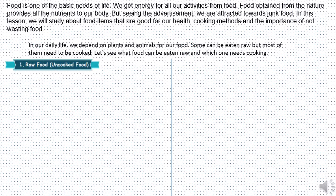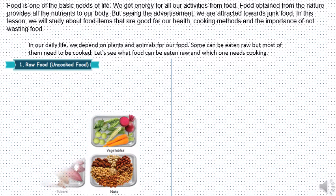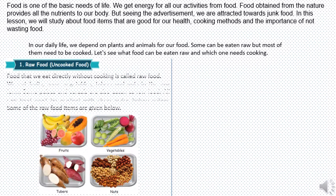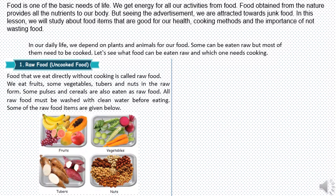Here we have two kinds of food. One is raw or uncooked food, and one is cooked food. Plants and animals give us our food. From this, some we can eat raw but the rest of it needs to be cooked.